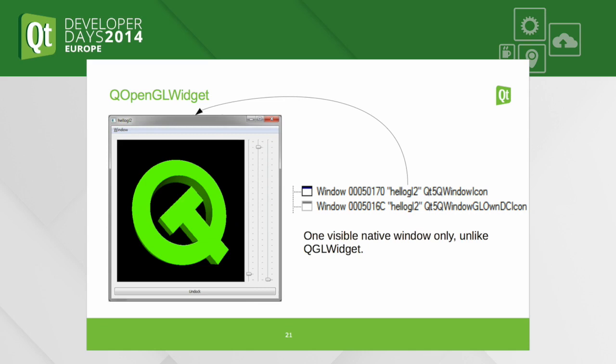This is one of the updated ones — Hello GL 2 — and as you can see there's a single visible native window, which is exactly what we want. Qt handles the compositing internally, so once you start adding that OpenGL scene into various layouts, reparenting, resizing things, it will just work much smoother than QGLWidget did, without all those glitches from the past.